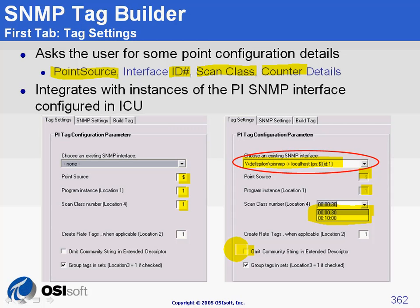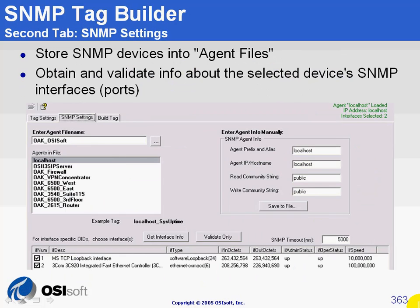I also told you that you can regroup tags together. As you can see, if you check that checkbox, you will group the tags that are similar in sets of however many tags you configured in ICA-U. So this is for the first tab: the tag settings.